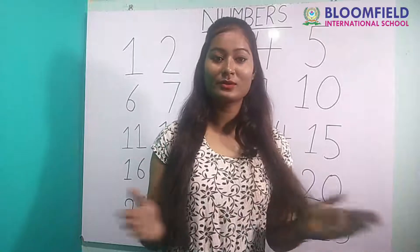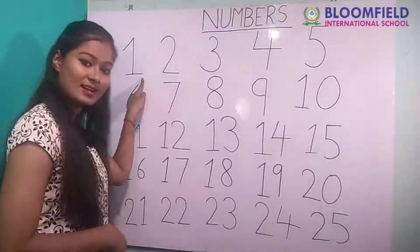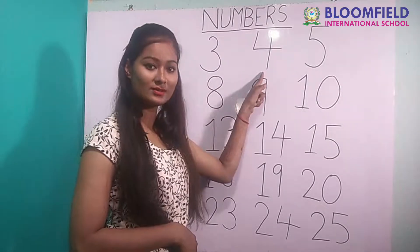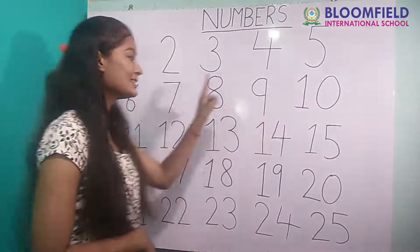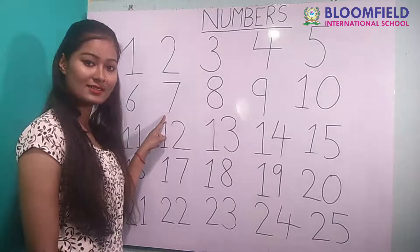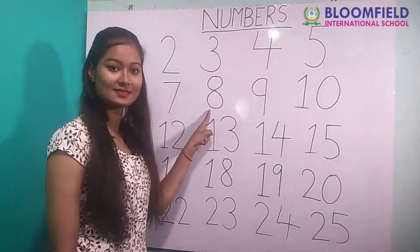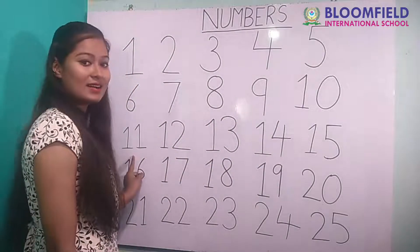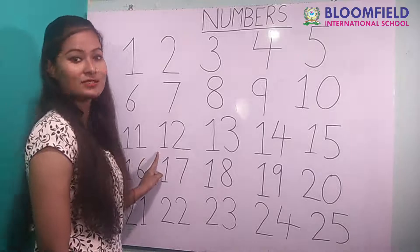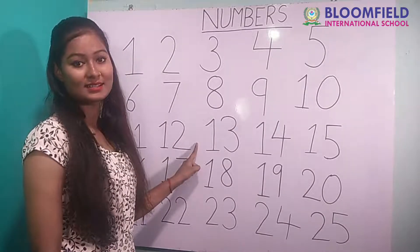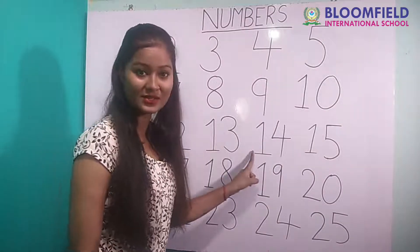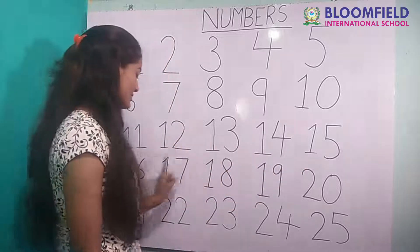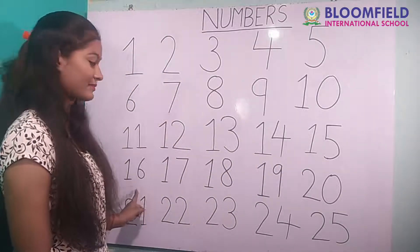So kids, let's count together. One, two, three, four, five, six, seven, eight, nine, ten. Eleven, twelve, thirteen, fourteen, fifteen, sixteen.